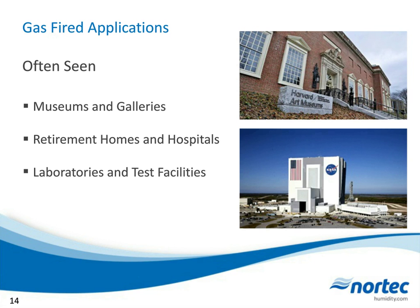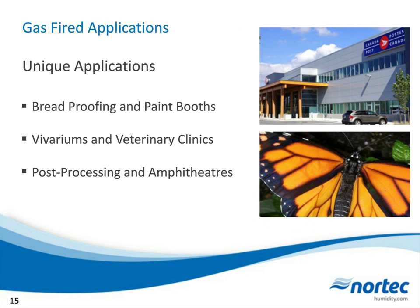Retirement homes are great applications — as people age, drier air causes skin to crack more, so humidification is beneficial for residents. Hospitals need humidity in the higher range to prevent disease from spreading. Laboratories and test facilities have high and tight humidity requirements. Some more unique applications include bread proofing boxes starting at about 120°F and 90% RH, paint booths, vivariums with federally controlled humidity requirements, veterinary clinics, mail processing facilities like Canada Post, and amphitheaters — where humidity affects sound quality and guest comfort.